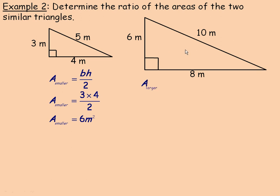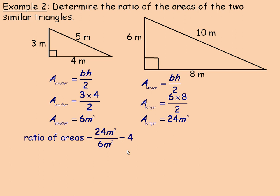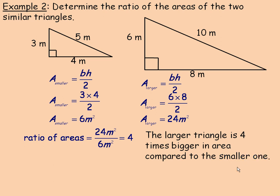For the larger triangle, base times height divided by 2 gives us 6 times 8 divided by 2. That's 48 divided by 2, which is 24. To find the ratio of the areas — how many times larger the big triangle is than the smaller one — we divide 24 by 6, which equals 4. So the area of the larger triangle is 4 times bigger than the area of the smaller one.